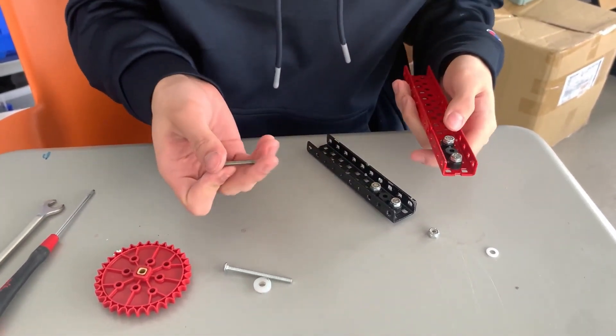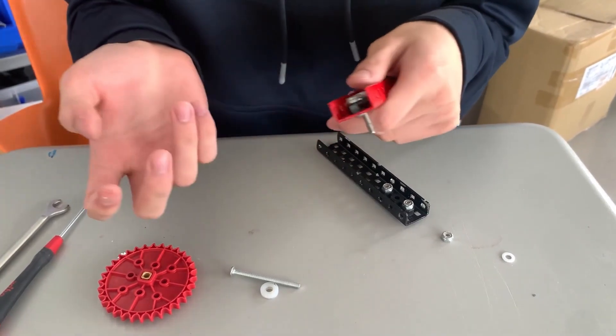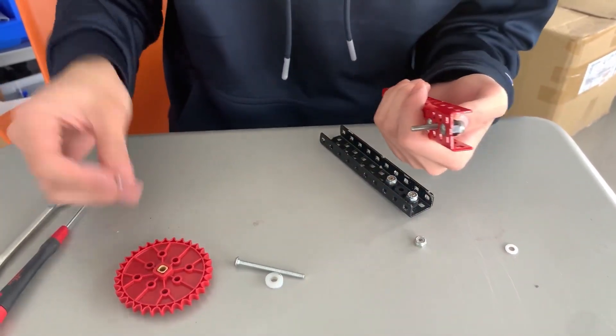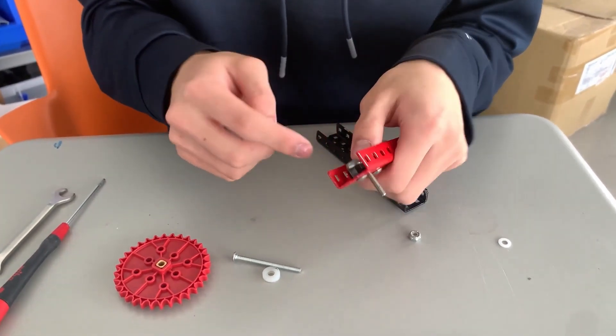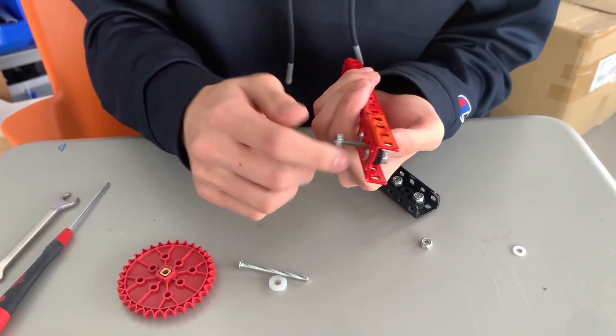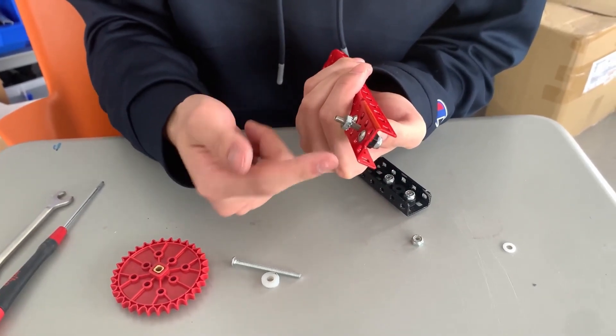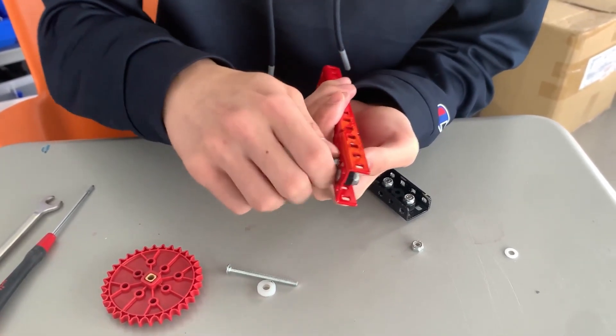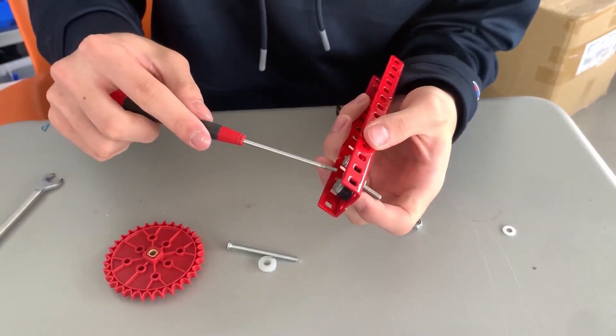To build this, you'll first want to anchor your screw. So grab your screw of your desired length, and then grab a cap nut. You'll then want to tighten the screw against your C-channel.